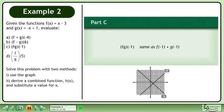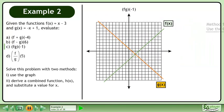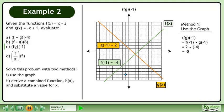In part c, we'll evaluate f times g at negative 1. First, we'll solve this problem using the graph. f at negative 1 equals negative 4. Draw a point on the graph of f at negative 1, negative 4. g at negative 1 equals 2. Draw a point on the graph of g at negative 1, 2. Multiply the y values to get negative 8. The notation reads: f times g at negative 1 equals negative 8.